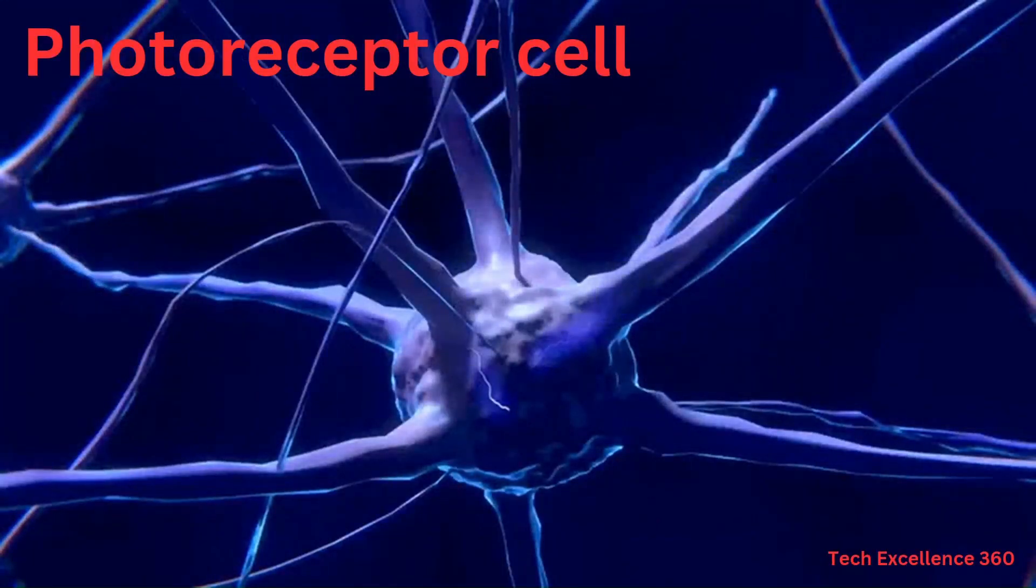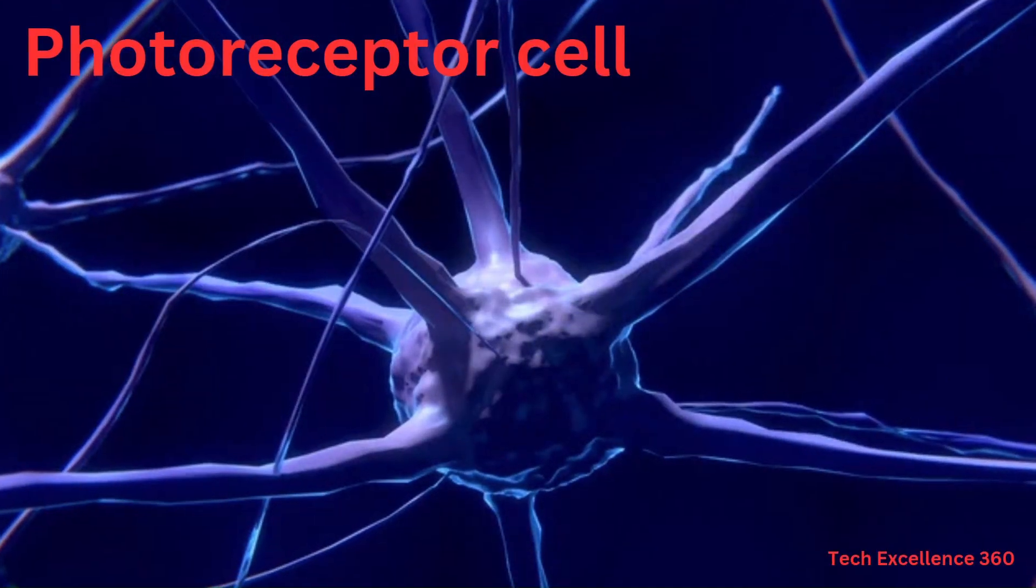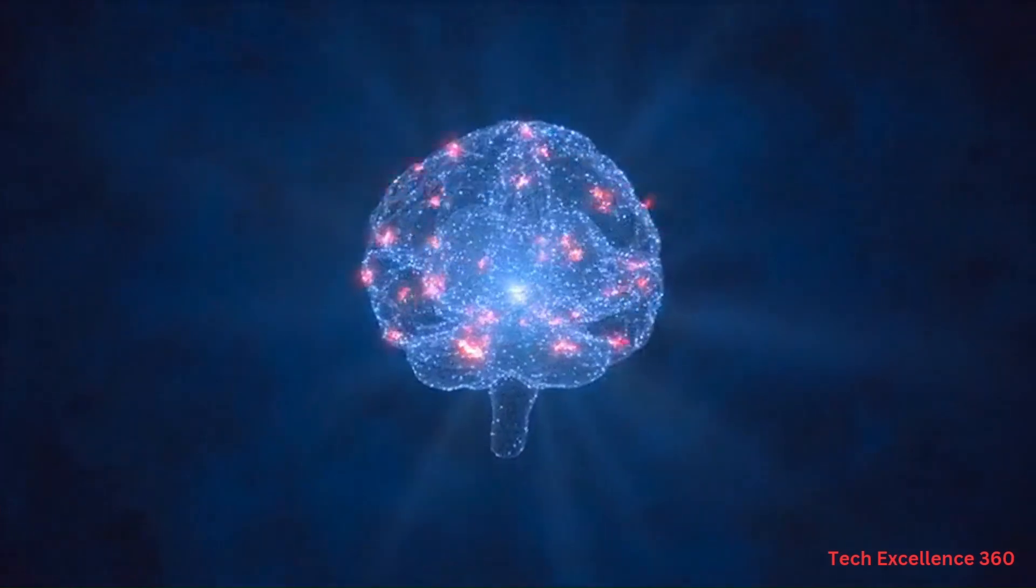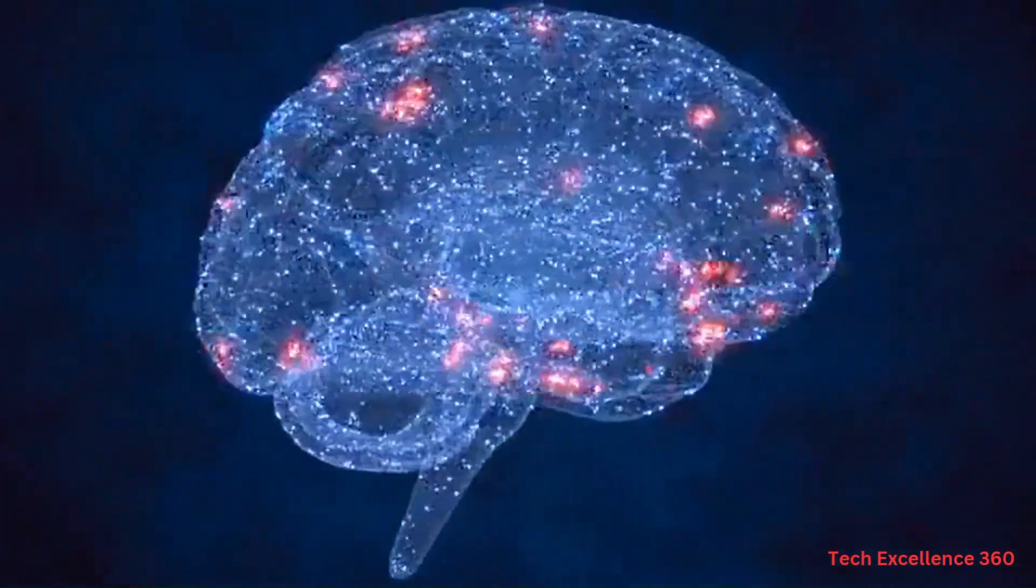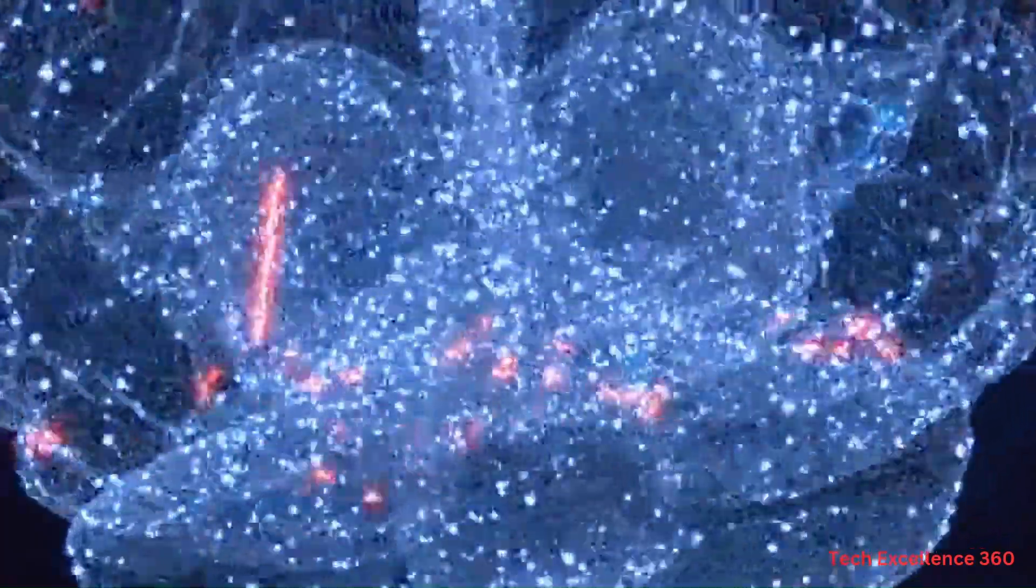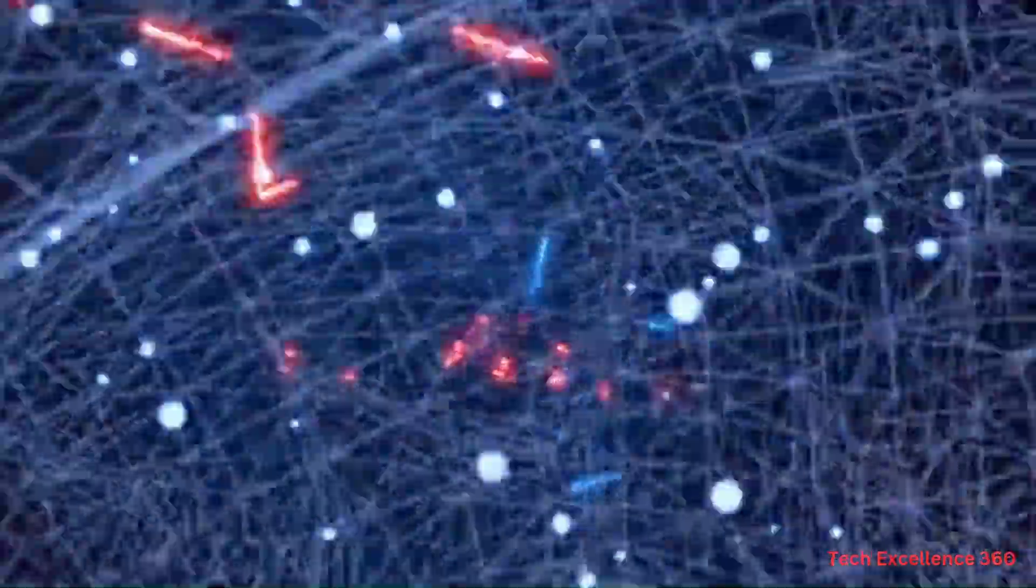When light enters the eye, the photoreceptor cells detect its intensity and color, sending signals to the brain through the optic nerve. This information is then processed by the brain, allowing us to perceive and interpret the visual world around us.